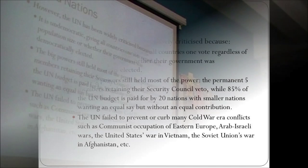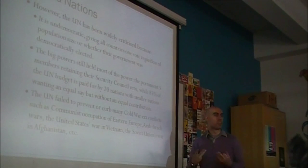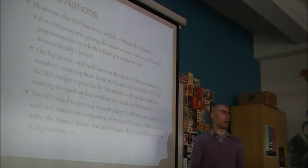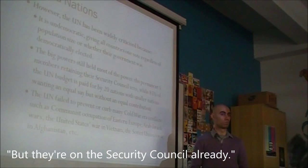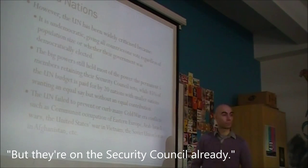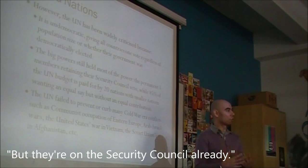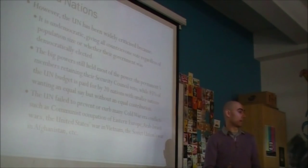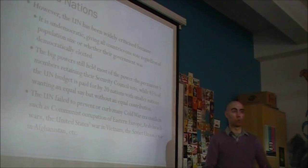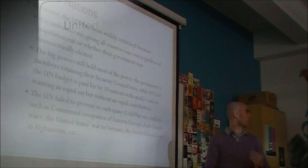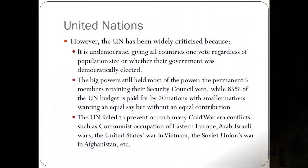85% of the budget is paid for by 20 nations, yet smaller nations want an equal say without equal contribution. The US, for example, argues that contributing a large chunk of the UN budget should mean a bigger say — though they're already on the Security Council. The deeper question is: how should you determine how much say countries have? Is it one person, one vote? One country, one vote? Or one dollar of funding provided, one vote?